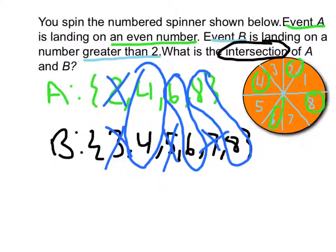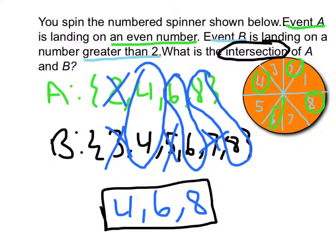So the numbers I circled were 4, 6, and 8. So that's basically your answer because it's the only numbers set A and B have in common. So that's what the intersection is. And I hope this helped you out. Thanks.